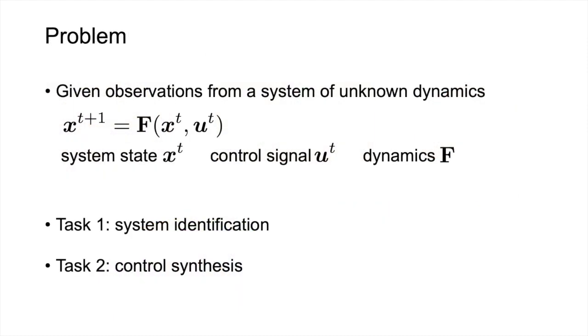More formally, we are given observations from a dynamical system of unknown dynamics that takes in the current state XT and the external control signals UT, and then generates the new state at T plus one. To model and control the dynamical system, we need to identify the system dynamics F and come up with ways to generate a sequence of control signals leading the system to the desired state.